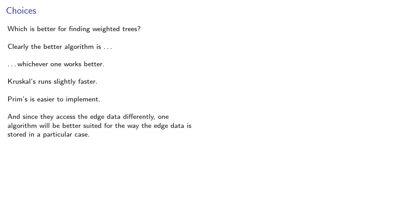So now we have two approaches to finding weighted trees, which is better? Clearly the better algorithm is whichever one works better. Kruskal runs slightly faster. Prim's is easier to implement. And since they access the edge data differently, one algorithm will be better suited for the way the edge data is stored in a particular case.